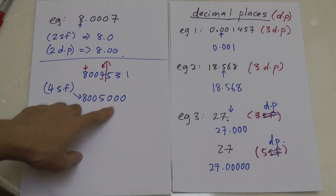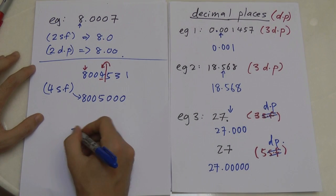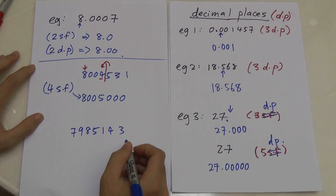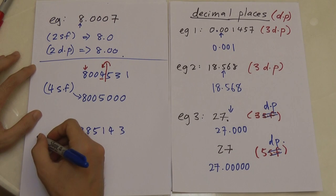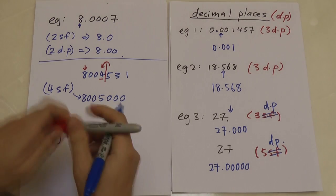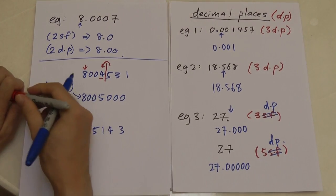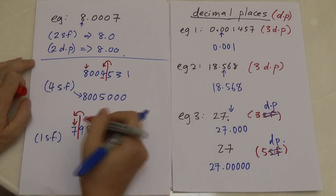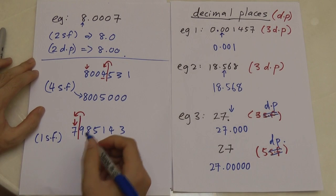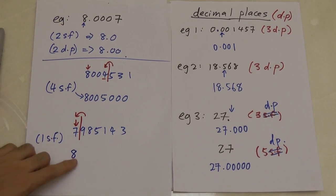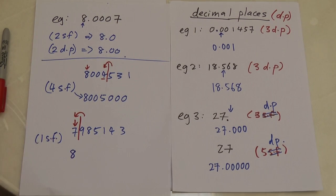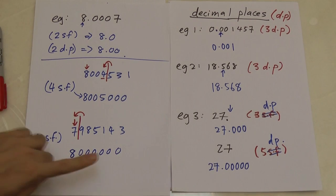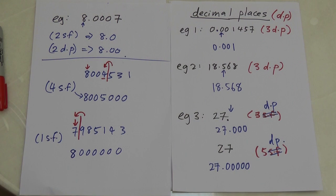One more example: 7,985,143 rounded to one significant figure. We start with 7 as the first digit and draw a line. The next digit is 9, which is bigger than 5, so we round up — 7 becomes 8. But we must replace all remaining digits with zeros to preserve the place value, giving 8,000,000.